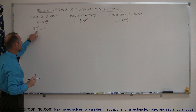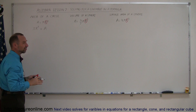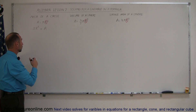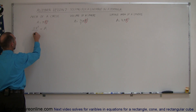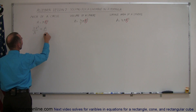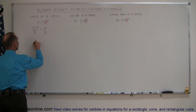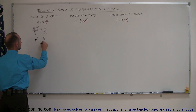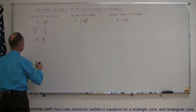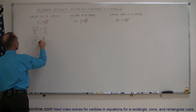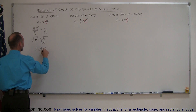Next, since we're solving for r, we want to divide both sides of the equation by the coefficient of the variable we're solving for — numerical or variable coefficient. In this case, we're going to divide by pi. The pi's cancel on the left side, and we're left with r squared equals A over pi. Since we want r, not r squared, we take the square root of both sides. So r is equal to the square root of A over pi.